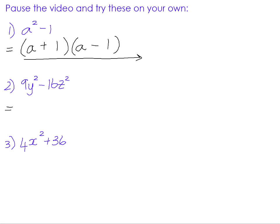Example two: 9y squared minus 16z squared. Is there a highest common factor? No — there is no number that goes into both 9 and 16 other than 1, and y squared and z squared share no common variable. Checking for difference of two squares: 9y squared is a perfect square, 16z squared is a perfect square, and they are being subtracted. So this is the difference of two squares, and it factors into (3y plus 4z)(3y minus 4z).